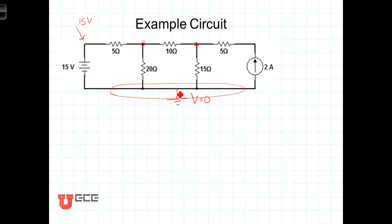Now with that, let's go ahead and write two node equations, one for each of the nodes. First we need to assign variable names. Let's call this one V1, and let's call the voltage at this node V2, both of them referenced relative to the bottom node.